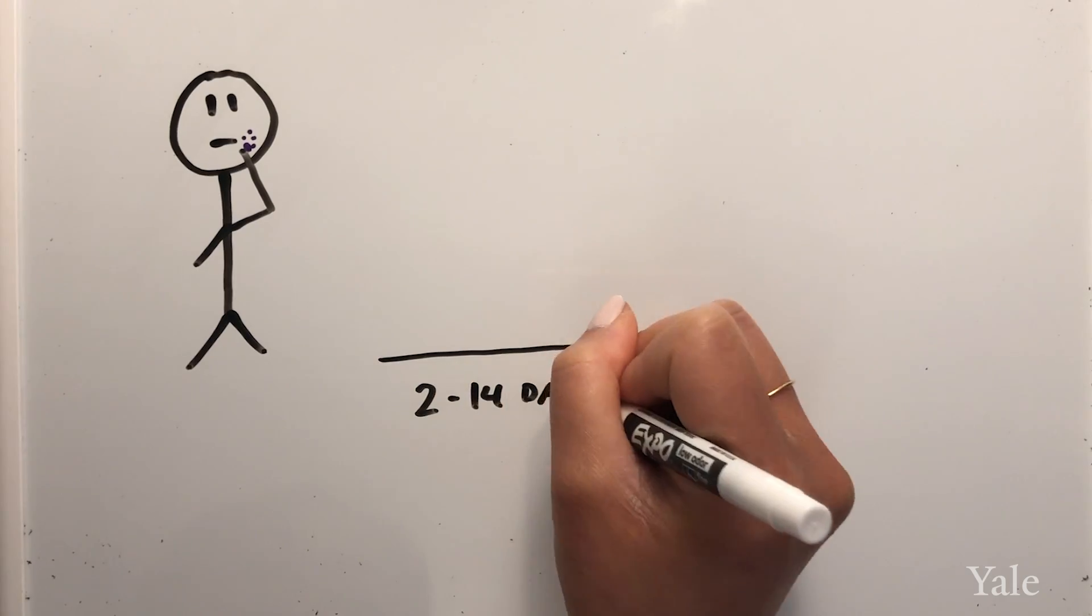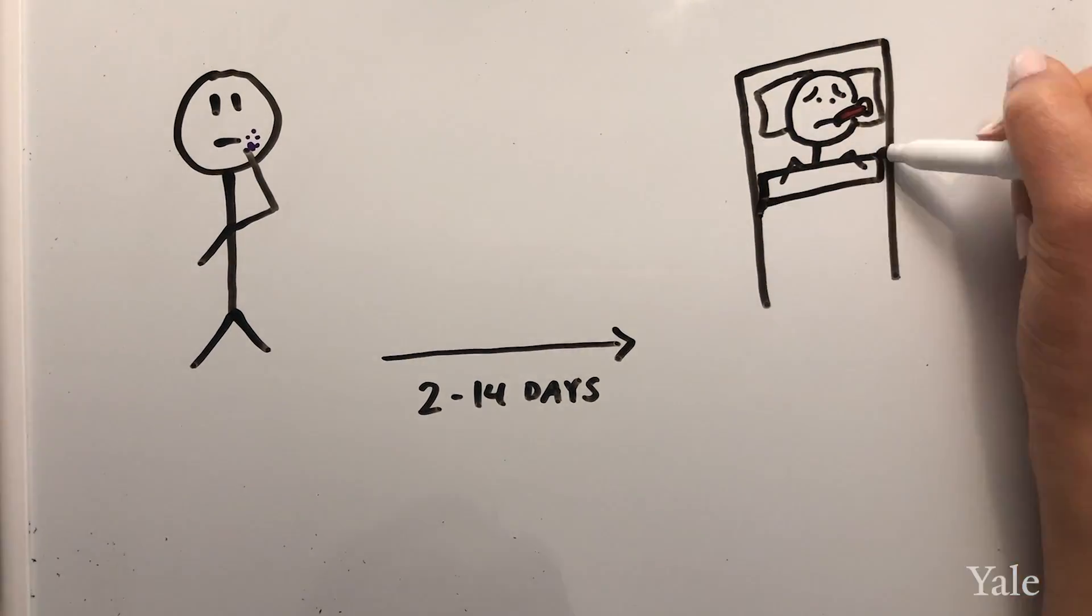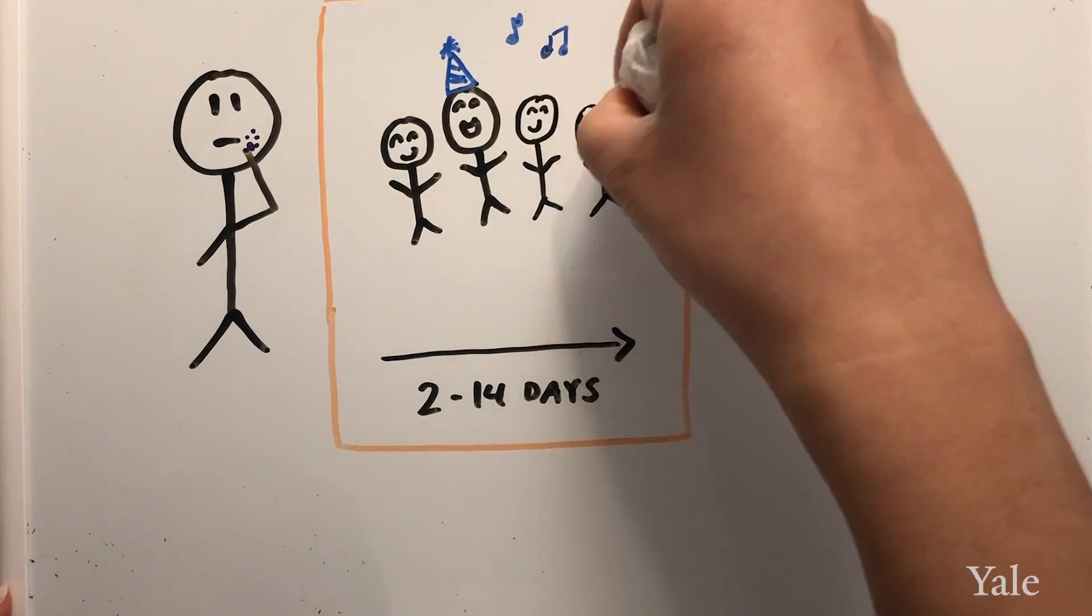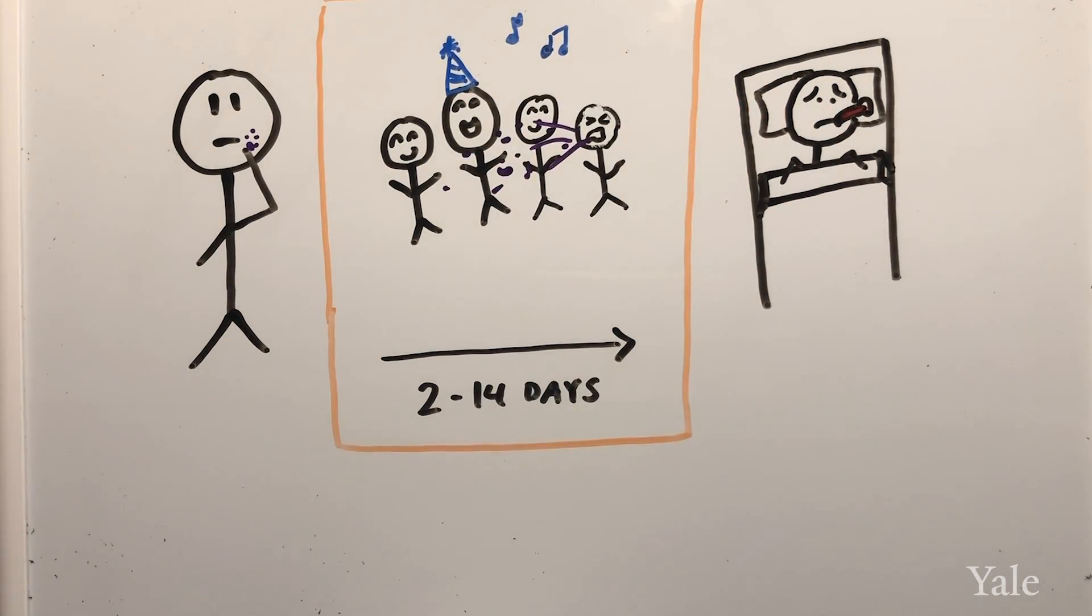The incubation period is the time of infection to appearance of symptoms and it can be anywhere from 2 to 14 days. This means you could be infected and show no symptoms but if you're not social distancing you will go on to infect others without even knowing you're sick yet.